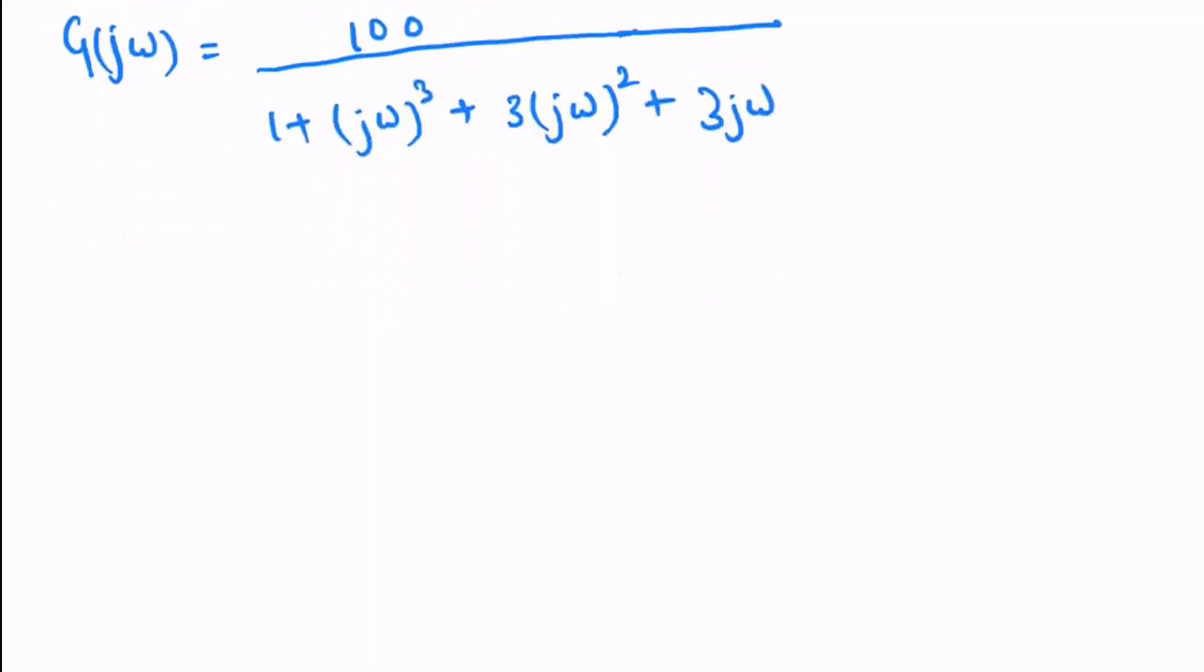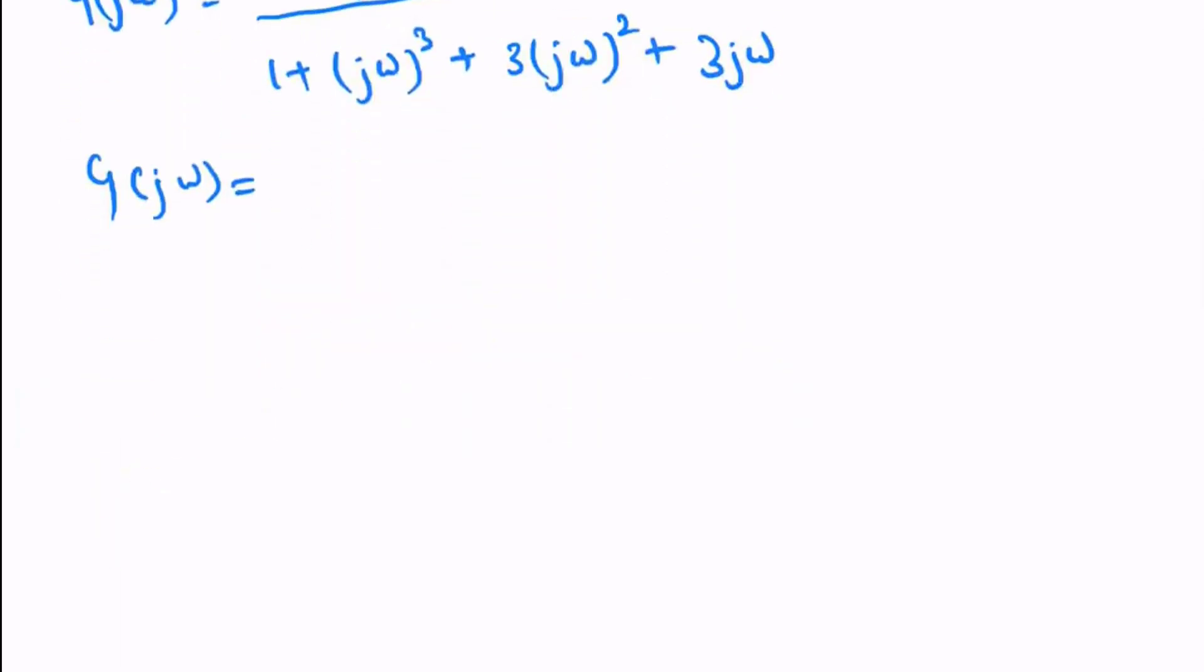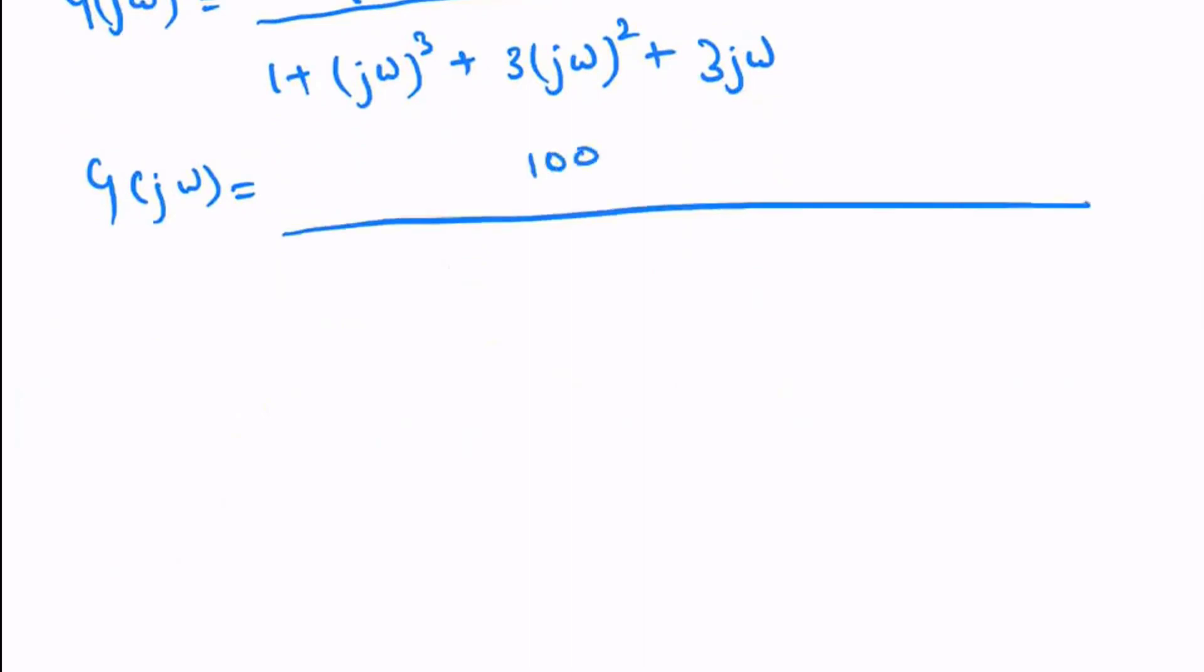Now let's separate the real and imaginary terms from the denominator. We get (1 - 3ω²) + j(3ω - ω³).